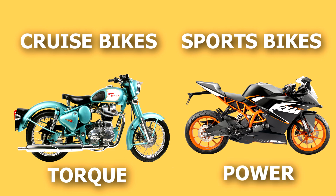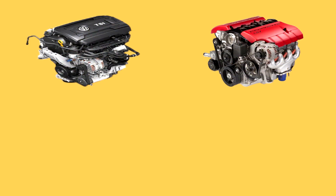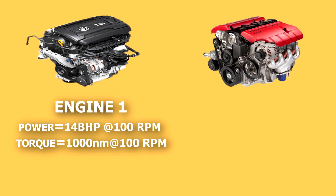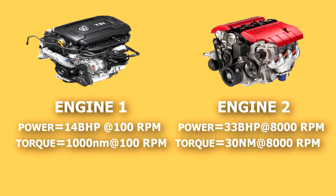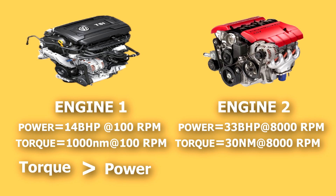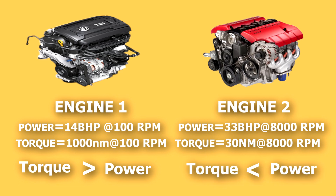Here is one last example. You can see two types of engines on the screen. Engine 1: maximum power 14 bhp at 100 RPM, maximum torque 1000 Nm at 100 RPM. Engine 2: maximum power 33 bhp at 8000 RPM, maximum torque 30 Nm at 8000 RPM. In engine 1, the torque is higher than the power, and in engine 2, the power is higher than the torque. Engine 1 is based on a torque architecture, whereas engine 2 is based on a power architecture.